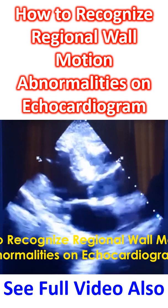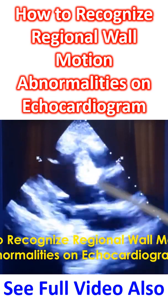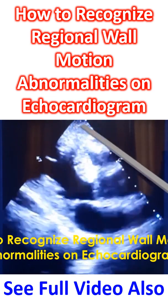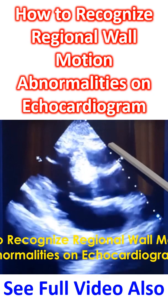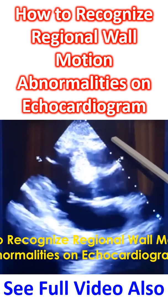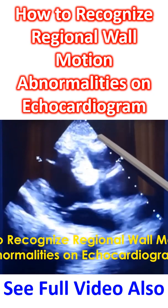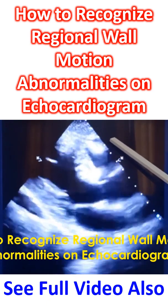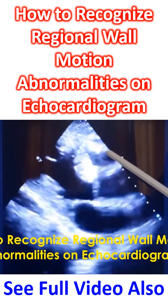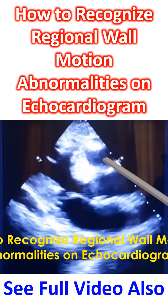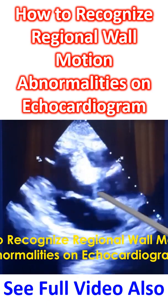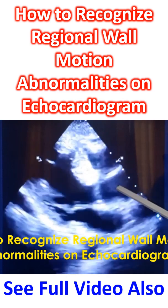This is an echocardiogram from the parasternal long axis view. In the parasternal long axis view, the transducer is placed in the left parasternal region, usually in the 4th left intercostal space close to the sternum. The transducer is rotated to obtain a good image. Long axis means from the base of the heart to the apex.